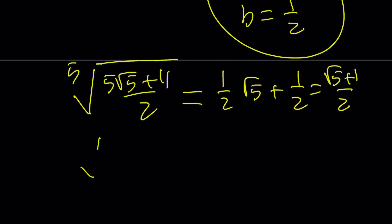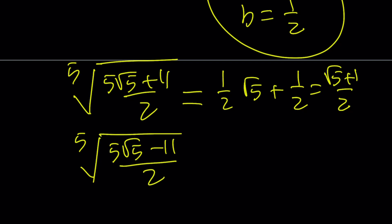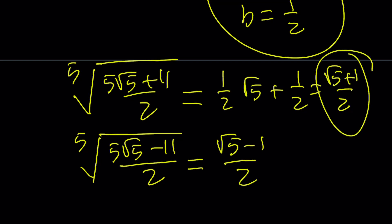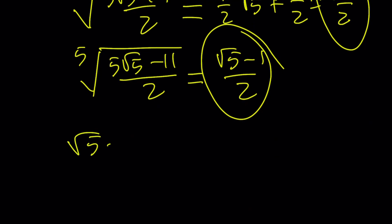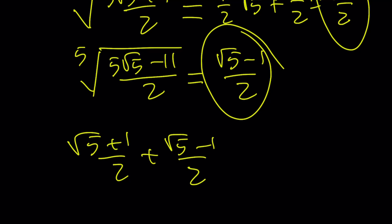Our assumption was that the fifth root of (5√5 + 11)/2 equals a√5 + b = (1/2)√5 + 1/2 = (√5 + 1)/2. The other term, by the conjugate idea, is (√5 − 1)/2. When we add these two together, the 1 cancels out and we end up with √5.